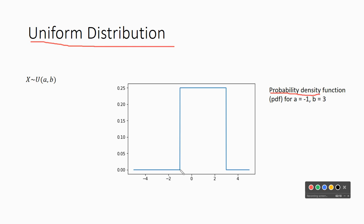So right here, this particular one starts at, it looks like negative one. So we would have a equal negative one, and it ends at three. And so we would have b equal to three.